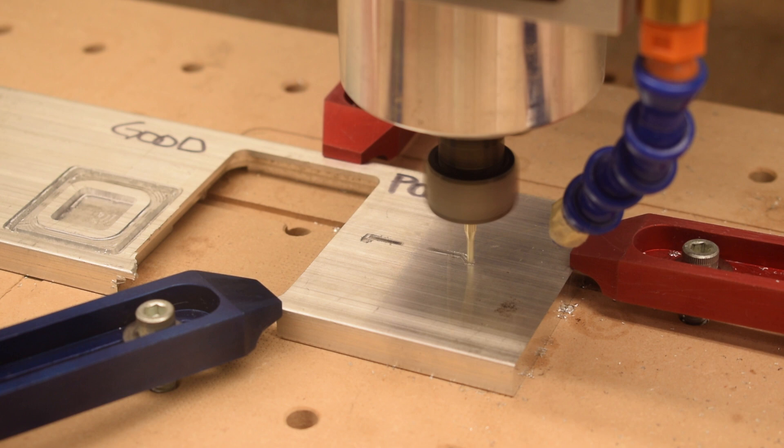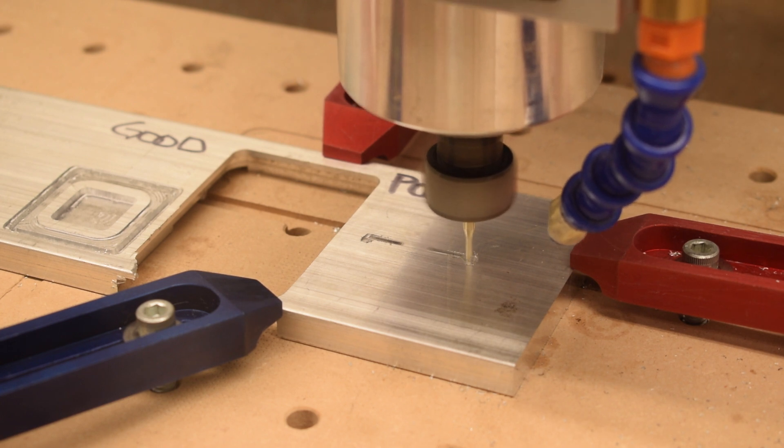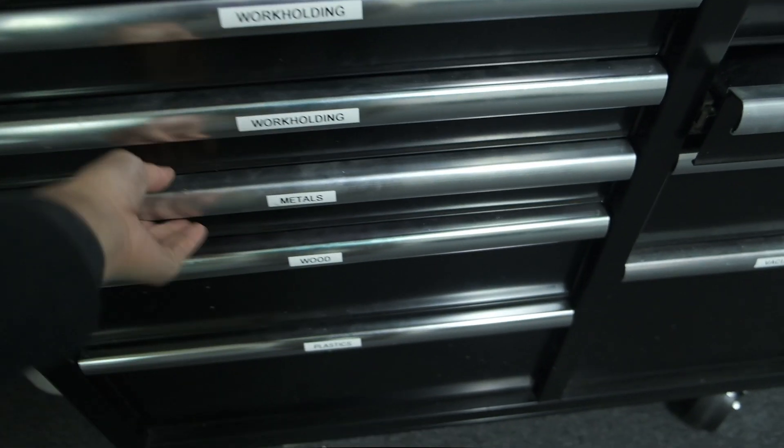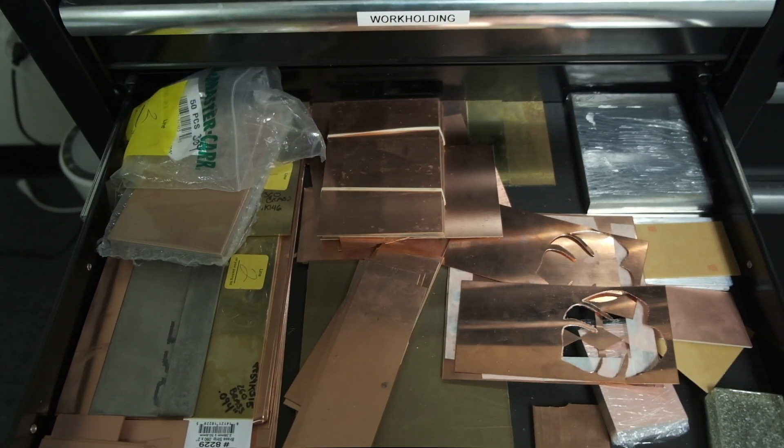Cuts that look like this aren't the CNC's fault, it's not your end mill's fault, it's the material's fault. And kind of your fault too if you chose that. If you don't know what alloy of metal you have, oftentimes it's best to just walk away.